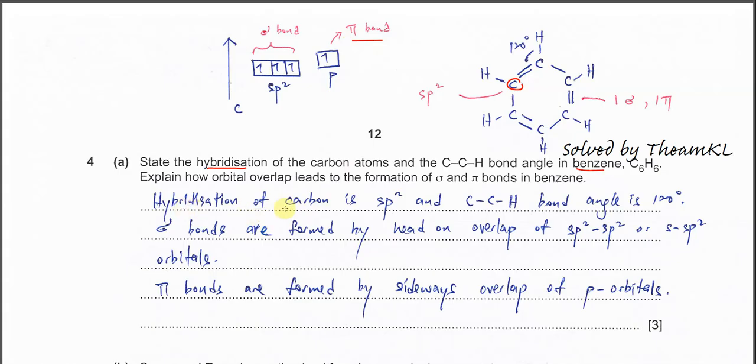First, you need to mention the hybridization of carbon is sp2 and the C-C-H bond is 120 degrees because the carbon has trigonal planar geometry. After that, you have to explain how the orbital overlaps lead to the formation of sigma and pi bonds in the benzene ring.